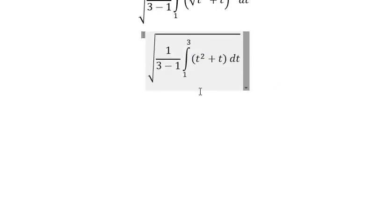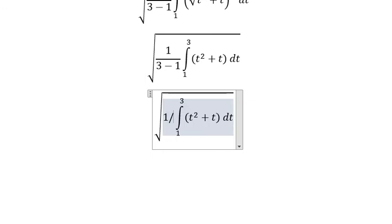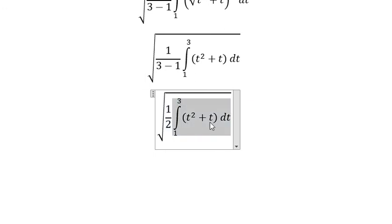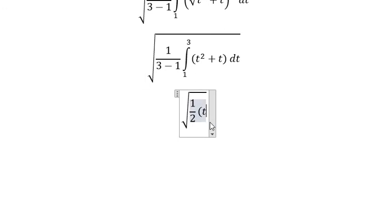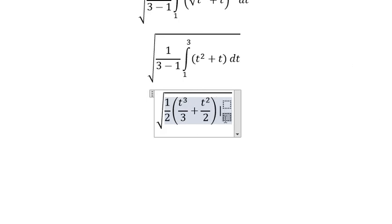And now we got the final answer. This one you got about 1 over 2. This one we change for t to the power of 3 over 3 plus t square over 2, and we put the square root in here. That's it from number 1 to number 3.